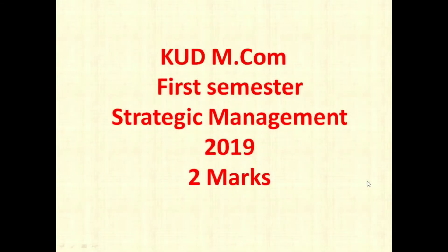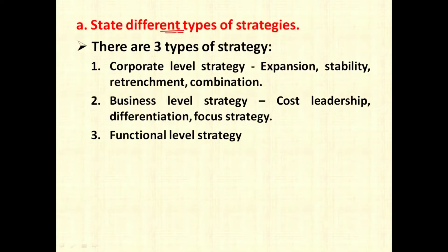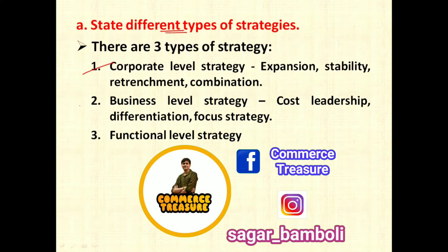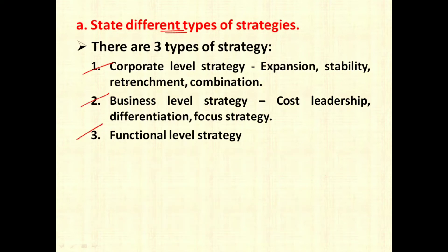The first question is: state different types of strategies. Strategies may be of different types. If we divide the strategy based on levels of strategy, then there are three types: first is corporate level strategy, second is business level strategy, and third is functional level strategy. Corporate level strategy can be further divided into expansion strategy, stability strategy, retrenchment strategy, and combination strategy, which can again be further divided into different types.